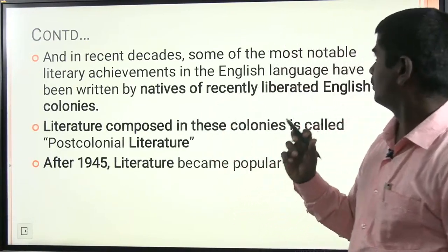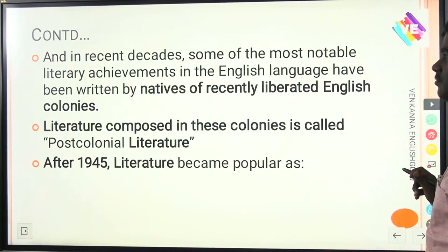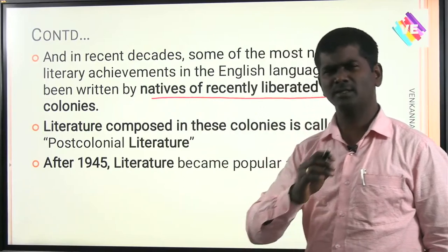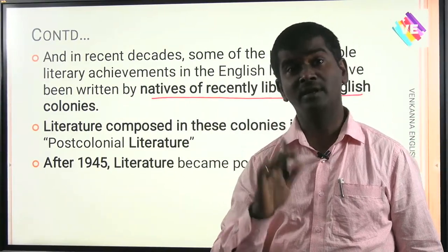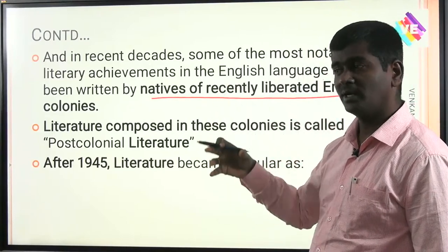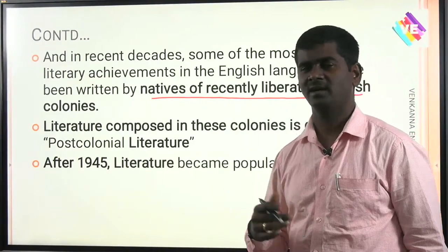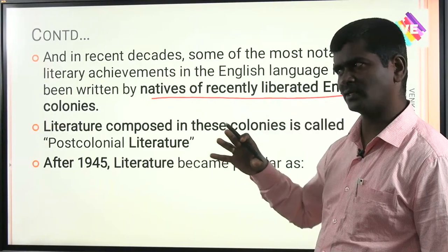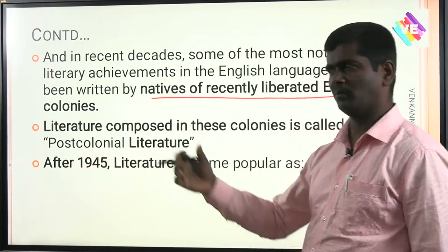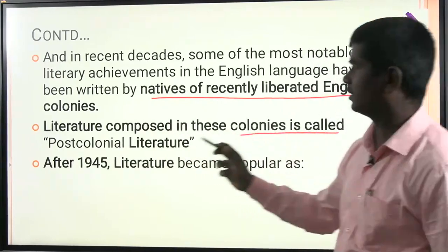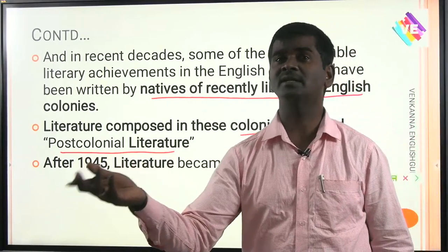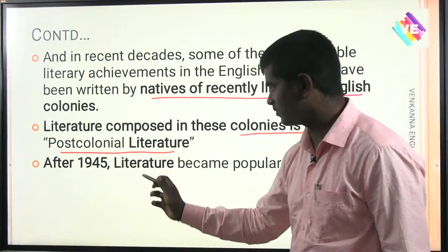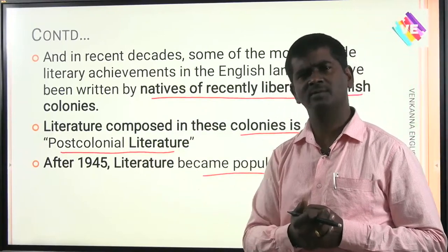In recent decades, some of the most notable literary achievements in the English language have been written by the natives of recently liberated English colonies. Most of the literature after 1950, 60, and 70 was written by the writers who were actually natives of liberated English colonies like Namibia, Nigeria, Ghana, South Africa, India, or the Caribbean islands. Literature composed in these colonies is called post-colonial literature.